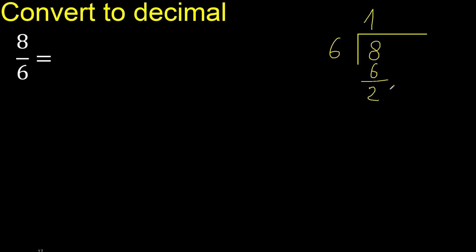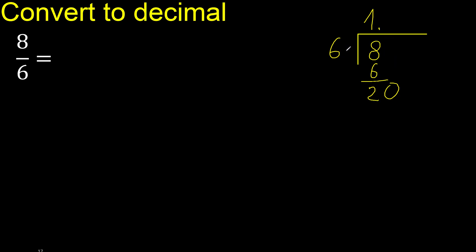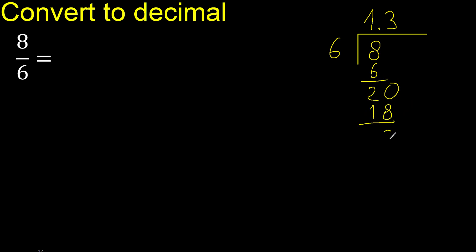Next. There is no number, therefore complete — always complete with 0. Place a point here. Now we have 20. 6 multiplied by 4 is greater, multiplied by 3 is 18. Subtract and complete — always complete with 0.